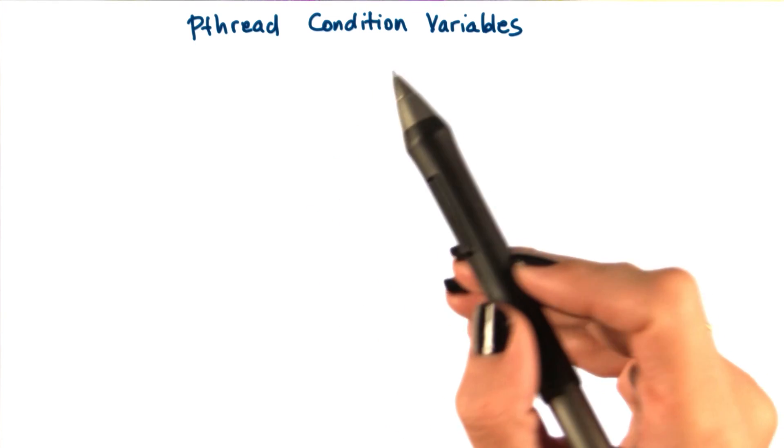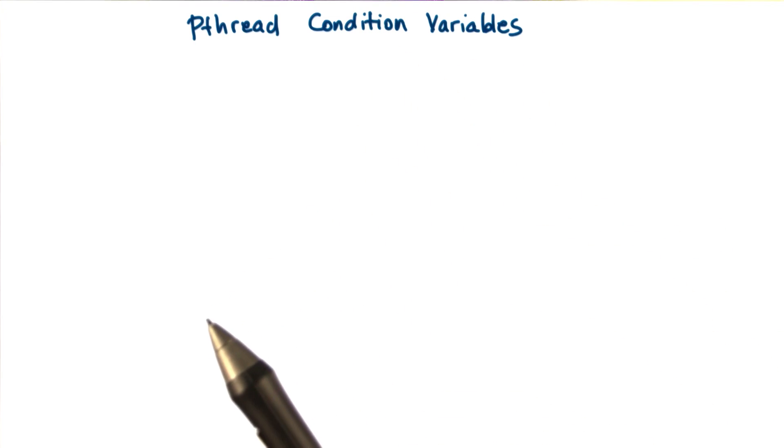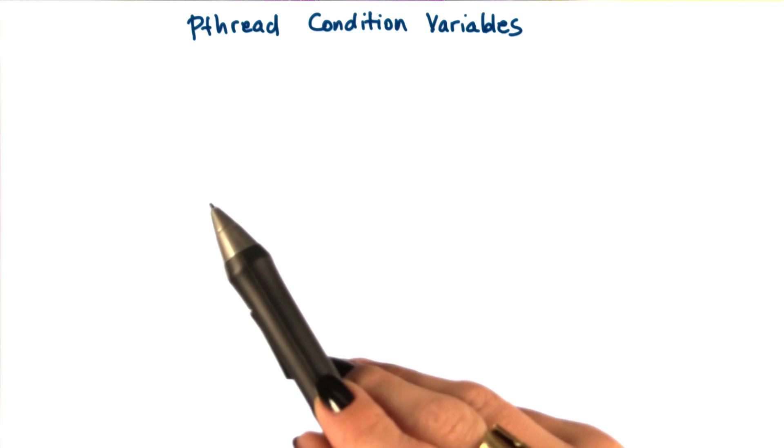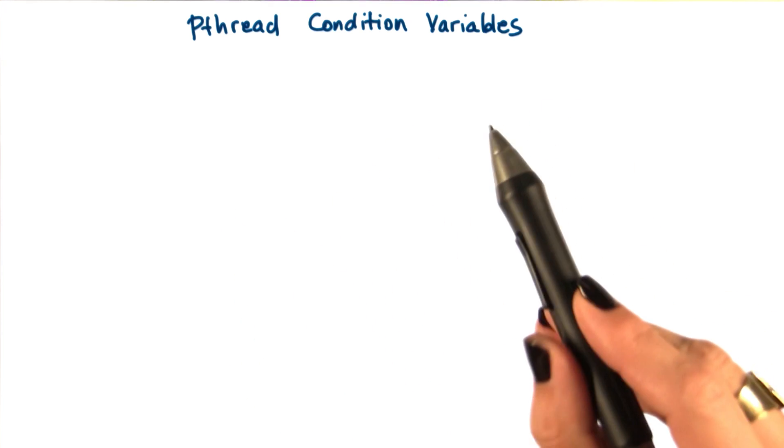As we described in Beryl, condition variables are synchronization constructs which allow blocked threads to be notified once a specific condition occurs.